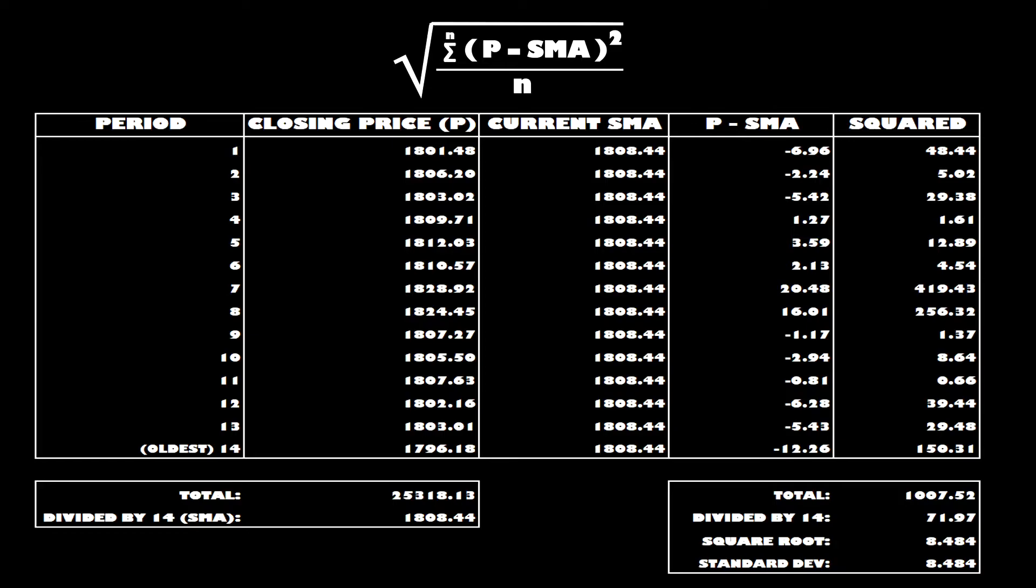And as we shift again one column to the right there, we're just doing the closing price minus the current simple moving average. Then in the column on the far right we squared all of those individual answers and in the bottom right hand corner we've added them all together.